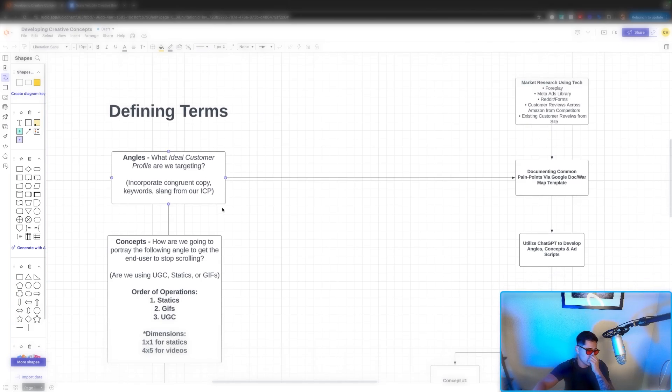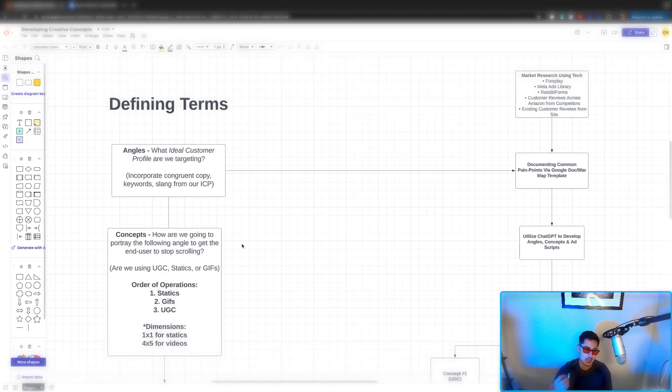We want to identify who our ideal customer profile is at the very start. And then from there, we reverse engineering concepts as far as ways that we can portray them to get them to stop scrolling on our advert.